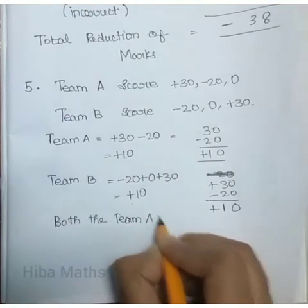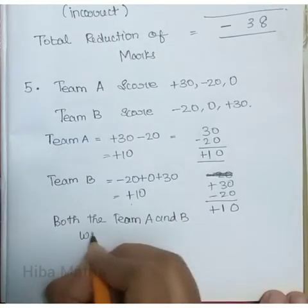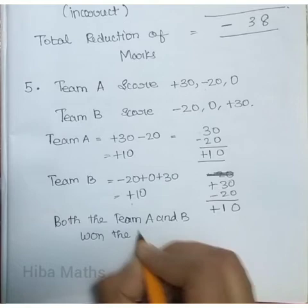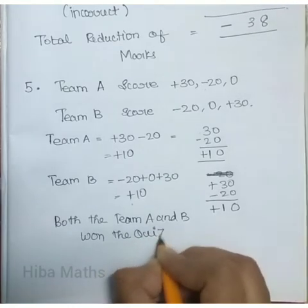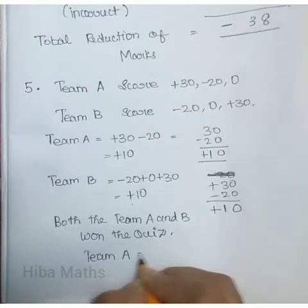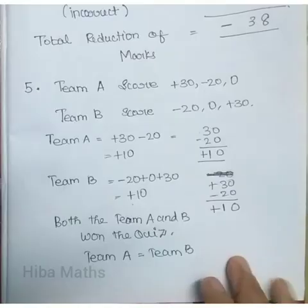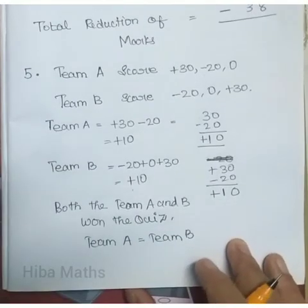Both teams won the quiz. If you ask which team won, both Team A and Team B final score is 10, so both teams won the quiz. Team A equals Team B.